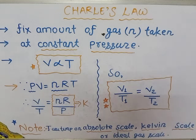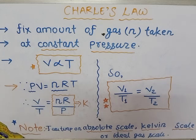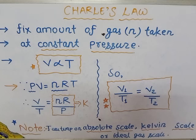So PV = nRT. Since n, R, and P are all constant, nR/P is a constant k. Therefore, volume upon temperature equals a constant — V/T = k. This gives us an important relation between volume and temperature.